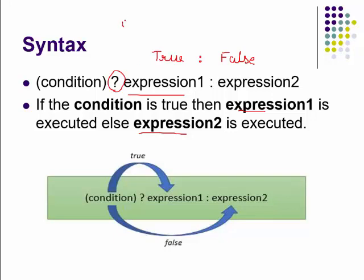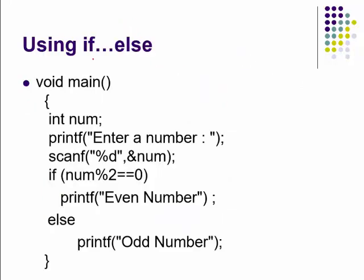The conditional operator is a combination of the question mark and a colon. If we are using an if-else statement to find whether a number is even or odd, we check whether the number is completely divisible by two — that means it has a remainder of zero.